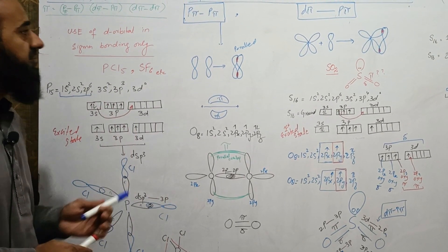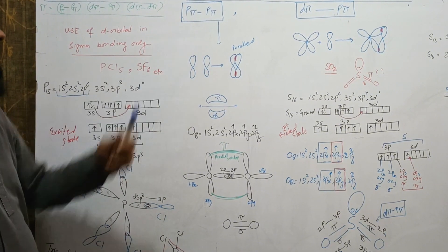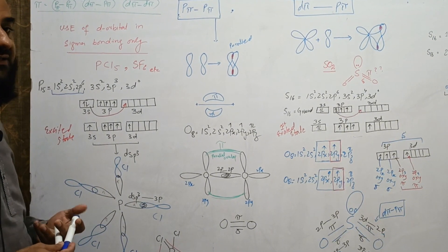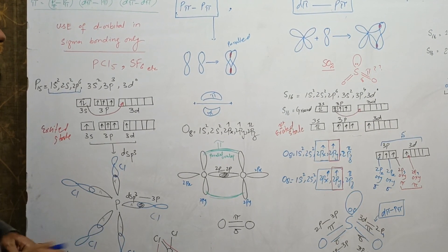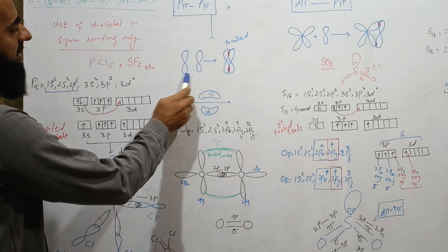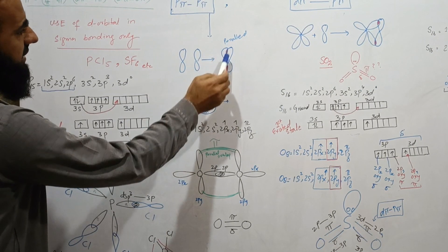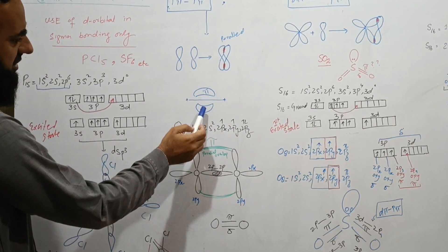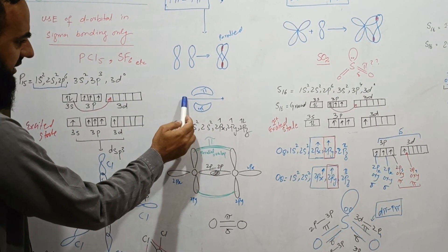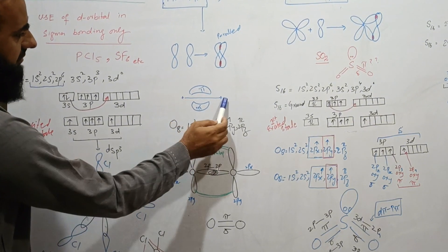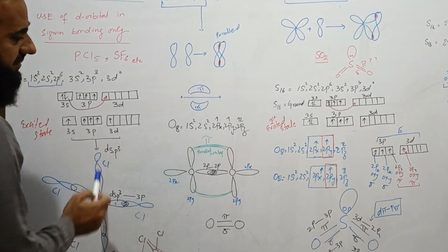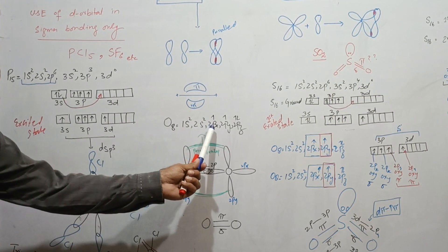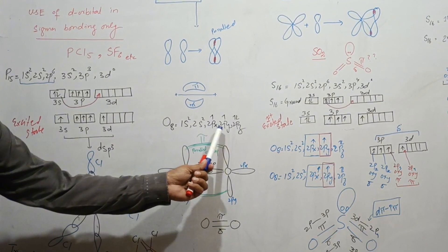Now I will briefly explain pπpπ bonding. You have already studied in previous classes that when two p orbitals overlap parallelly they form pi bonds, and the pi electrons are present above and below the nuclear axis of the combining atoms. Oxygen has atomic number eight and has two partially filled orbitals: 2px and 2py — these are degenerate orbitals.